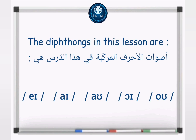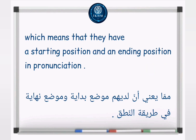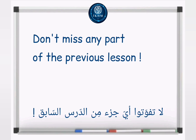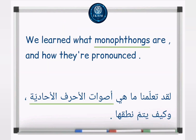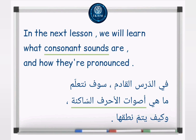The diphthongs in this lesson are as we noticed: diphthongs are a combination of two sounds, which means that they have a starting position and an ending position in pronunciation. Don't miss any part of the previous lesson, where we learned what monophthongs are and how they're pronounced. In the next lesson, we will learn what consonant sounds are and how they're pronounced.